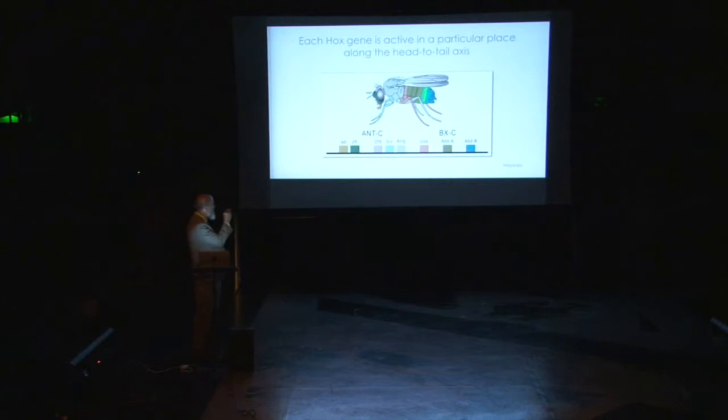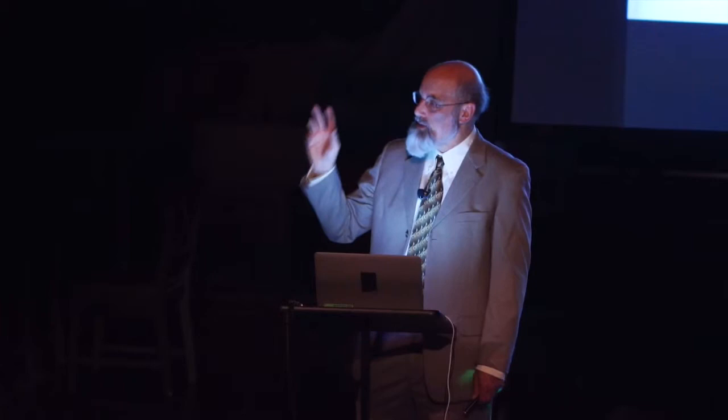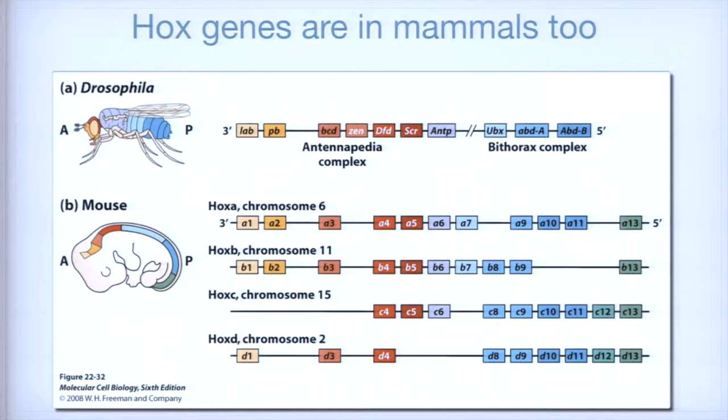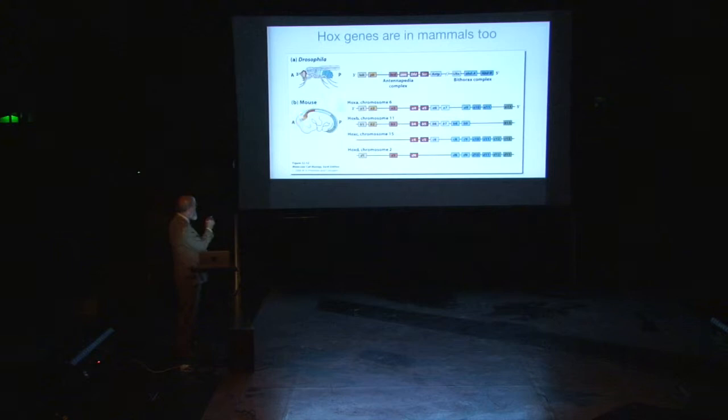The different properties of different parts of the body depend on the activities of different genes — this gray gene causes this gray part of the body to have certain properties. That was insects, and it turns out it's the same story for us. This is a mouse embryo, but it's the same for us. We have multiple copies of the cluster of genes — like backups — though some are incomplete copies. The genes are active along the head-to-tail axis of the animal in the order that they appear in the chromosome.